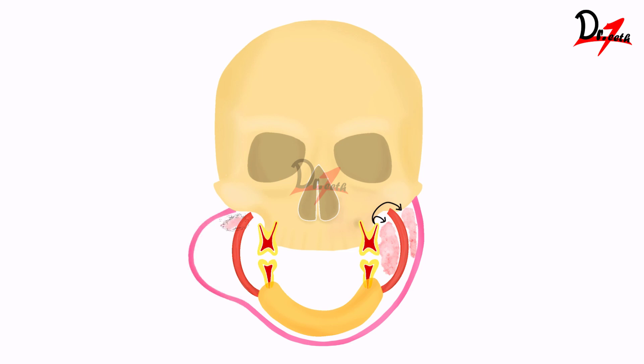And as you can see here, we will have a dome-shaped swelling. We will see the full extent of the swelling when we shift to the lateral view. But for now, let us understand that this is the buccal space infection.